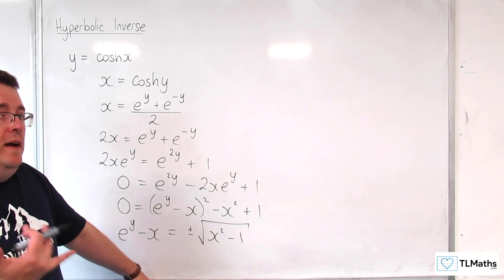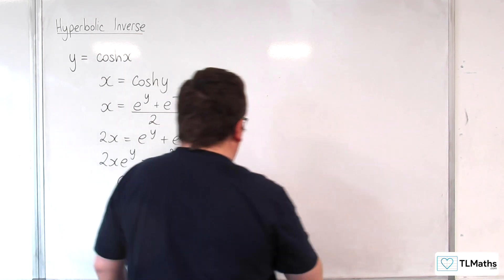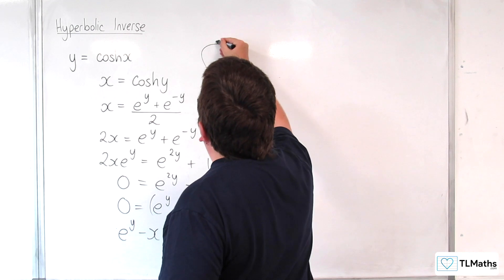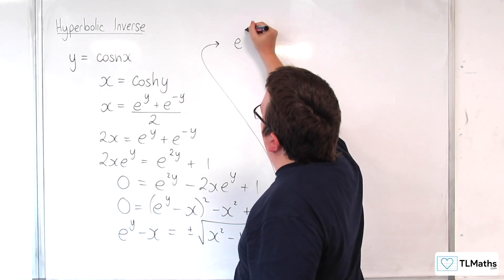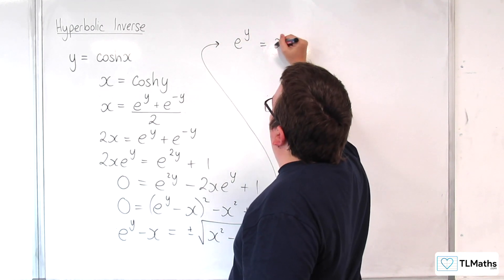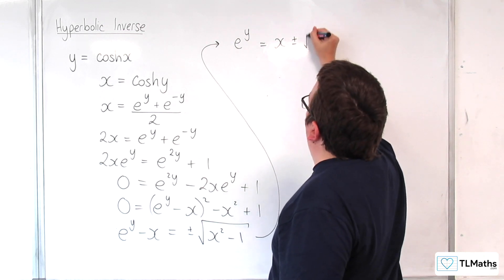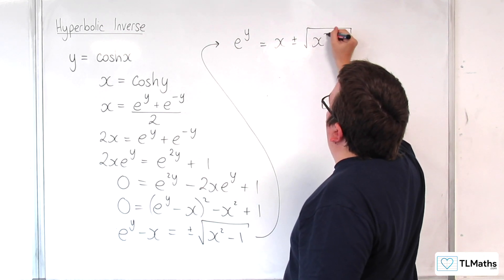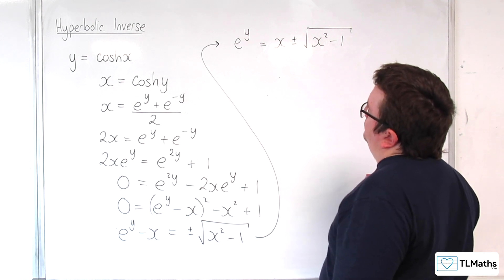Now I'm just going to leave that plus or minus there for the moment. So now I can write e to the y as being equal to x plus or minus the square root of x squared, take away 1.